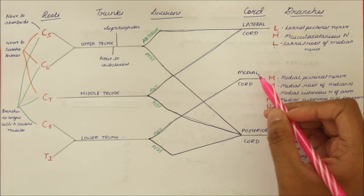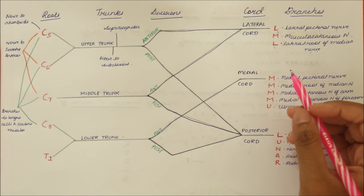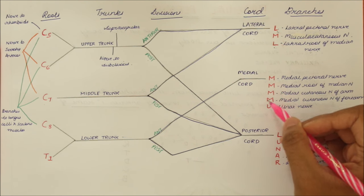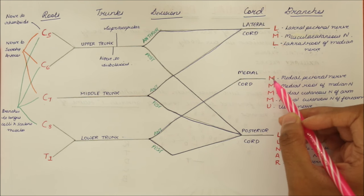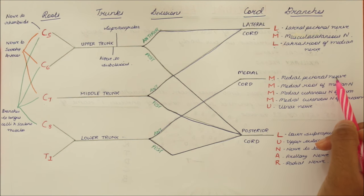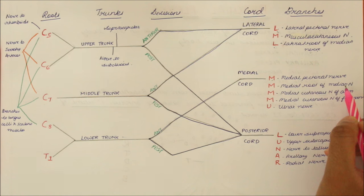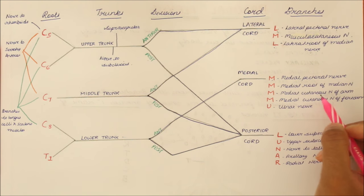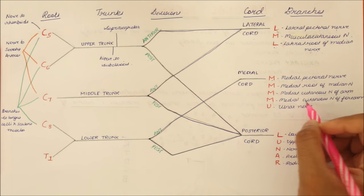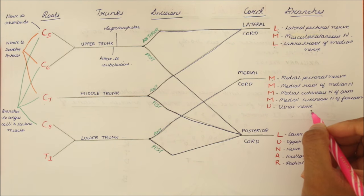Moving on to the 5 branches of the medial chord, they are M, M, M, M, U — four M's and one U. The first M stands for the medial pectoral nerve, the second M for the medial root of median nerve, the third for the medial cutaneous nerve of arm, the fourth for the medial cutaneous nerve of forearm, and finally U stands for the ulnar nerve.